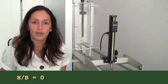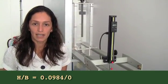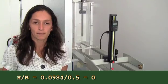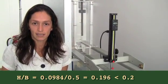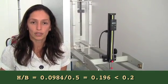The head-to-width ratio H over W is 0.0984 divided by 0.5, which equals 0.196, which is less than 0.2.